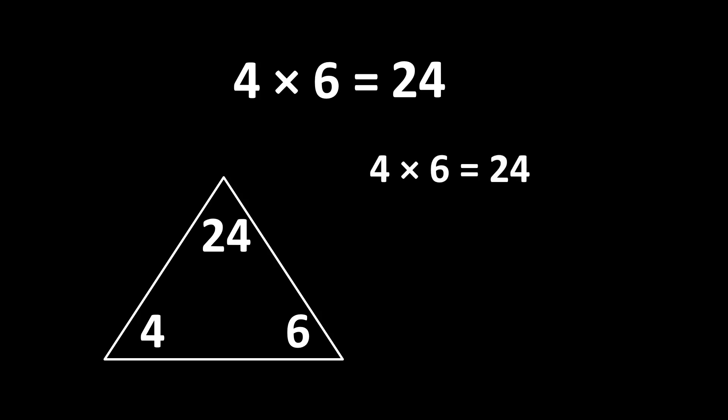To begin, if 4 times 6 is equal to 24, then 6 times 4 is also equal to 24. And since multiplication is related to division, we also know that 24 divided by 4 is equal to 6, and 24 divided by 6 is equal to 4.